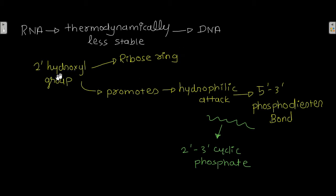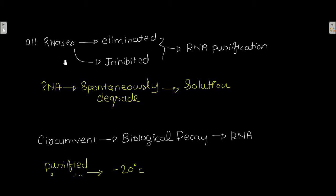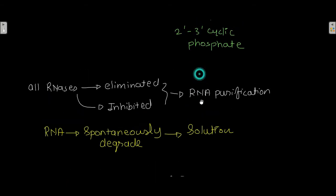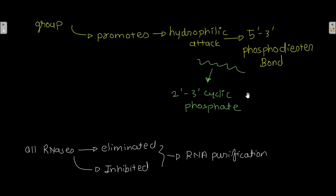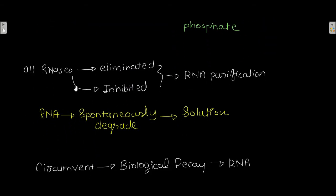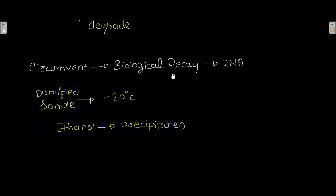The 2' hydroxyl group present on the ribose ring of RNA promotes the nucleophilic attack on the 5'-3' phosphodiester bond — this is why RNA is thermodynamically less stable than DNA. Even if you eliminate or inhibit all the RNases present in the solution during RNA purification, the RNA will still spontaneously degrade because of this nucleophilic attack on the 5'-3' phosphodiester bond.